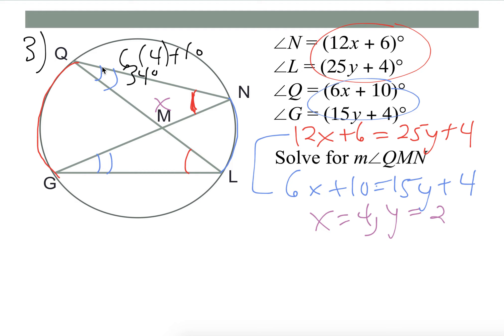And then if we plug x and y in for N, we would get 54. If we plug our x and y in, so then how do we get angle QMN? Well, it's a triangle, so it has to add to 180.